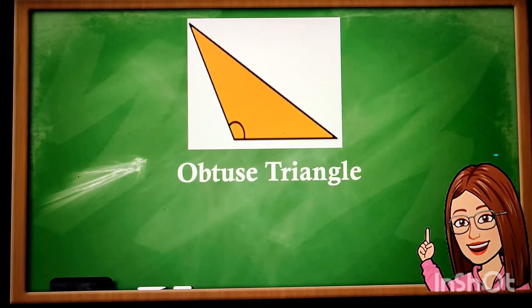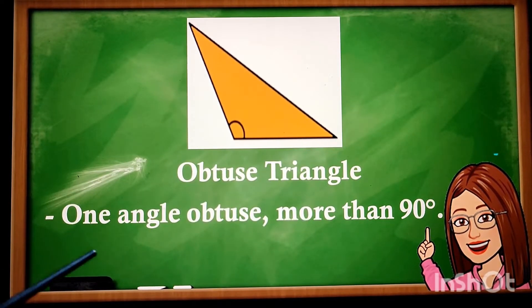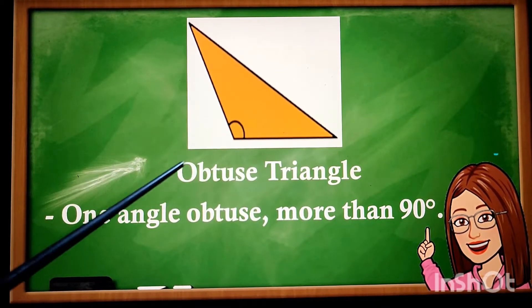Then, the last one. We have obtuse triangle. One angle obtuse. It measures more than 90 degrees.